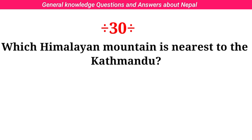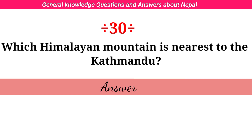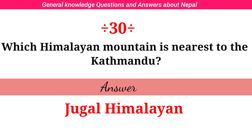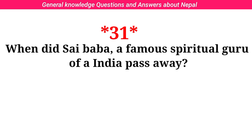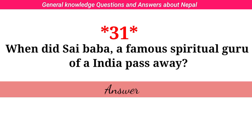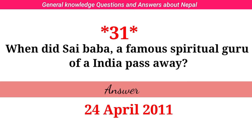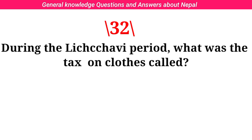Which Himalayan mountain is nearest to Kathmandu? Answer: Jugal Himalayan. When did Sai Baba, the famous spiritual guru of India, pass away? Answer: 24 April 2011. During the Lichchhavi period, what was the tax on Kudus called? Answer: Shailikar.